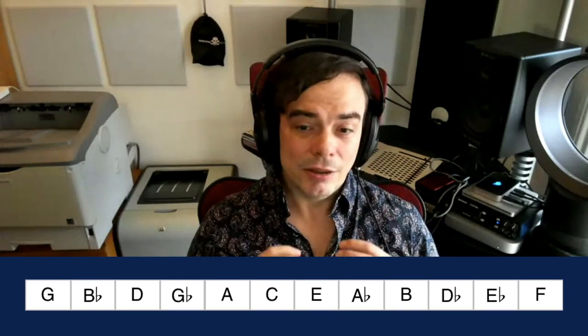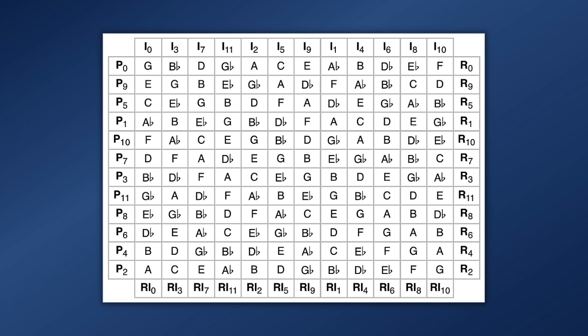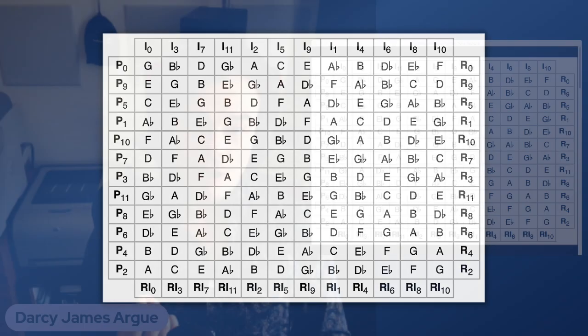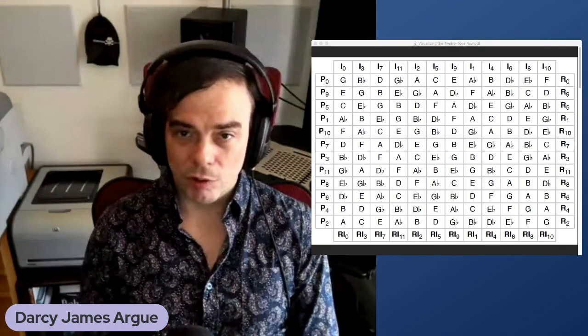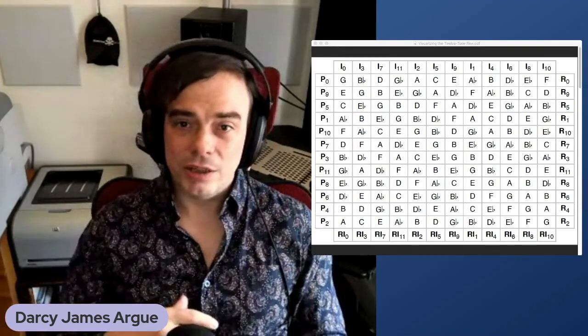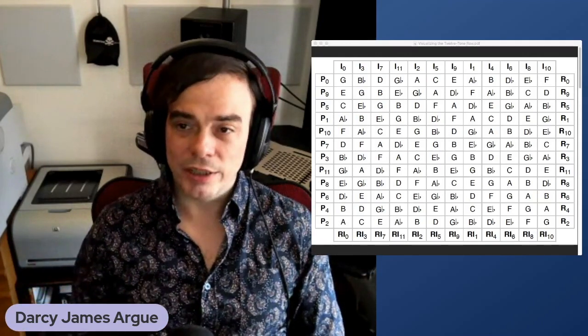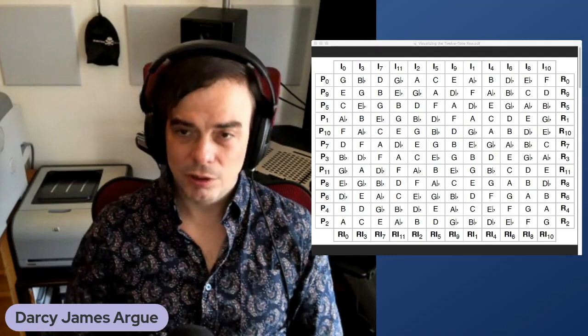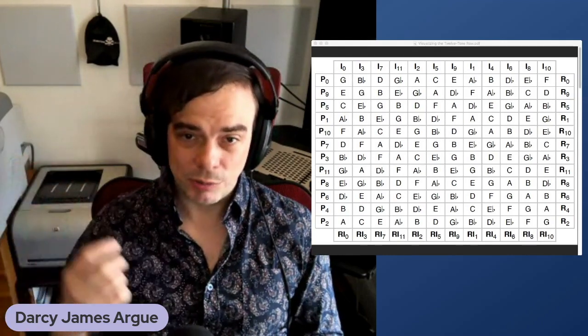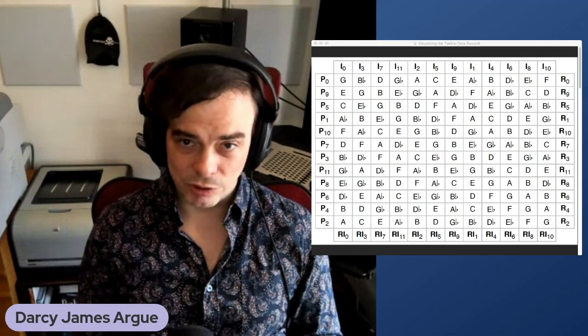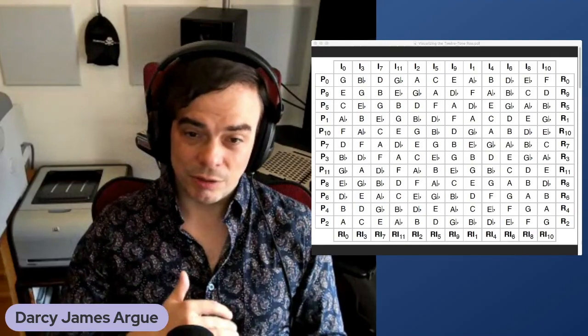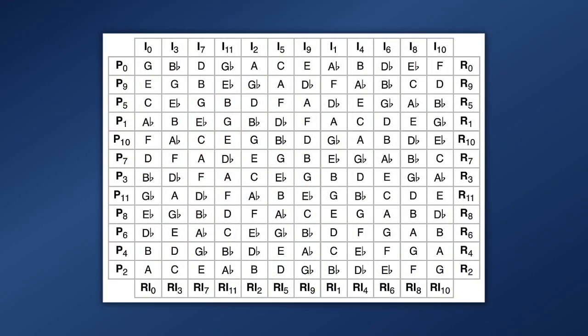And I think the way most people then continue to develop and visualize all the various permutations of this row is to put it into a matrix. Here is the matrix for Berg's Violin Concerto, the row that he used there. As you can see, that original form of the row is horizontally across the top, so reading left to right. You can also read it right to left and get the retrograde form. You can read it top to bottom and get the inverted form. And reading it bottom to top, you get the retrograde inversion.